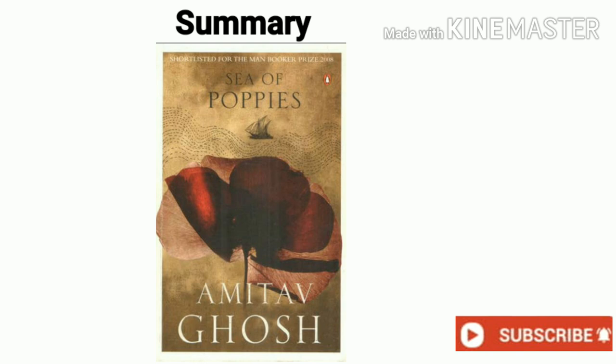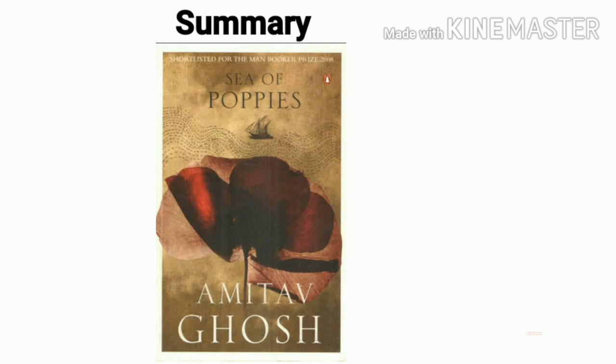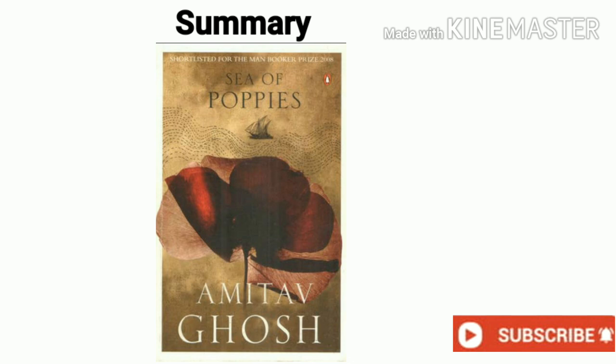He is tried for forgery in a sham trial orchestrated by Burnham and his cronies. The court sentences him to work as an indentured laborer for seven years in Mauritius. It is then that he meets Afat, a half-Chinese, half-Parsee opium addict from Canton — his sole companion in prison — since the two will eventually be transported together on the Ibis.